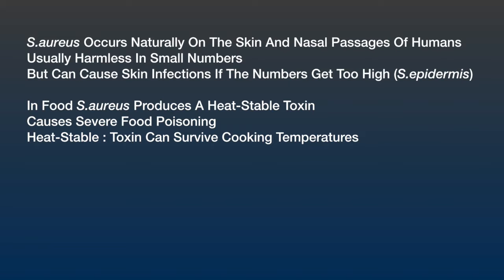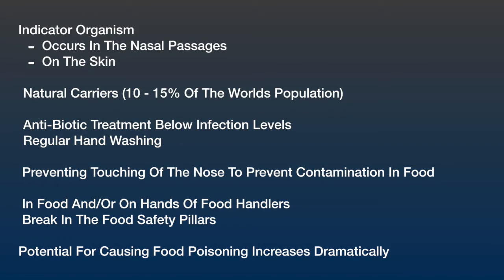Let's take a look at the bacteria Staphylococcus aureus. S. aureus is a bacteria that occurs naturally on the skin and nasal passages of humans. Usually this bacteria is harmless in small numbers, but can cause skin infections if numbers get too high — this bacteria is known as Staphylococcus epidermis. In food, however, Staphylococcus aureus is particularly concerning because it produces a heat-stable toxin which can cause severe food poisoning. Heat-stable means that the toxin can survive cooking temperatures.